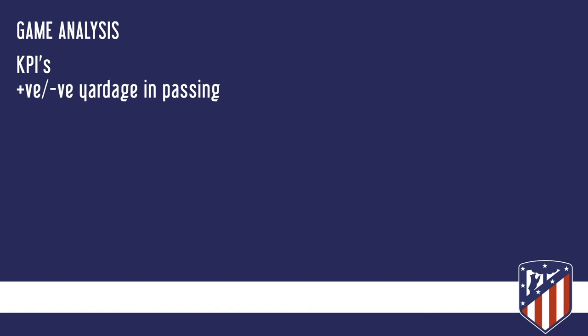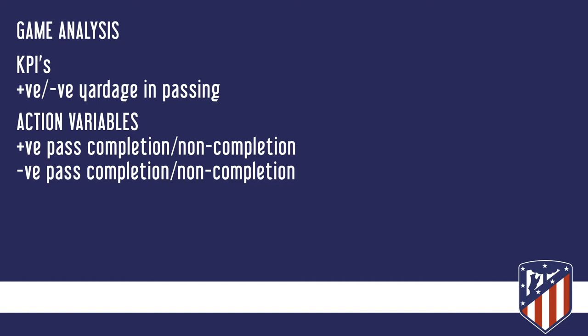Looking through performance analysis systems, we need to have a look at performance indicators. To analyse the passing of Liverpool, I've looked at positive and negative yardage. On top of the performance indicators, you need action variables: positive pass completion or non-completion, and negative pass completion and non-completion.